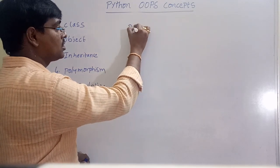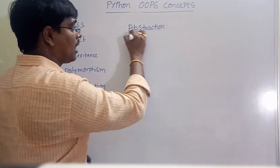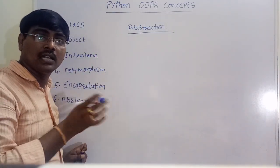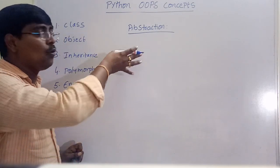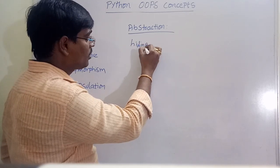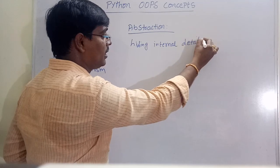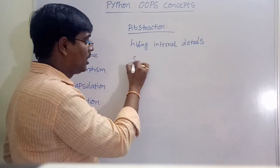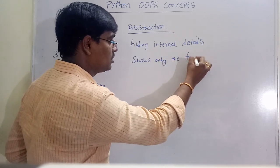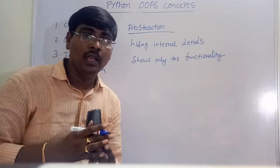Finally, abstraction. Abstraction means hiding the internal details of a function and exposing only what the function does. The internal details are hidden and only the functionality is shown.